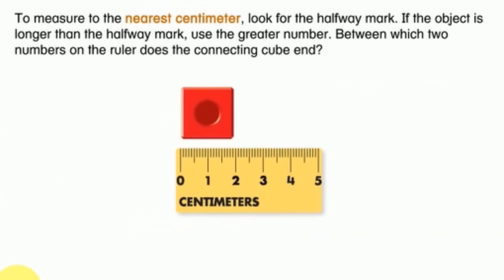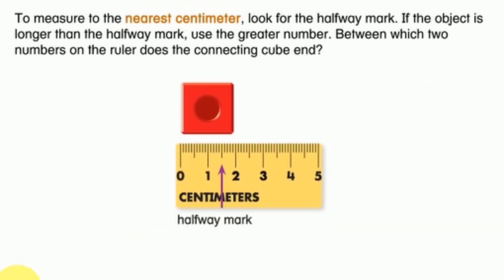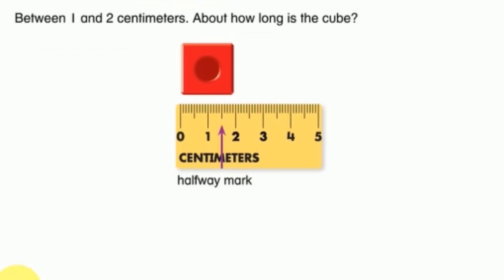To measure to the nearest centimeter, look for the halfway mark. If the object is longer than the halfway mark, use the greater number. Between which two numbers on the ruler does the connecting cube end?